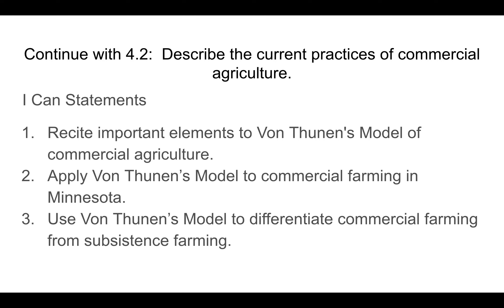Continuing on with Unit 4 Agriculture, the content objective for 4.2 is to describe the current practices of commercial agriculture. The 'I can' statements are: one, recite important elements of von Thünen's model of commercial agriculture; two, apply von Thünen's model to commercial farming in Minnesota; and three, use von Thünen's model to differentiate commercial farming from subsistence farming.